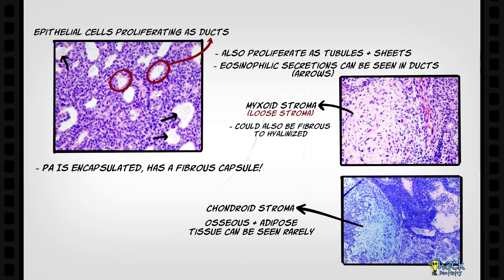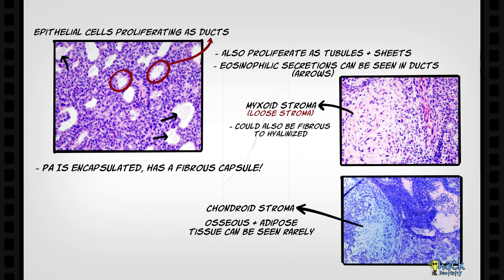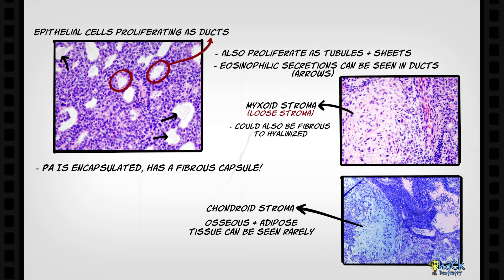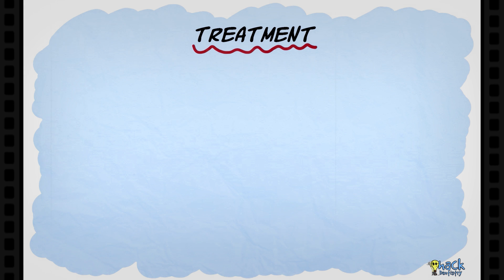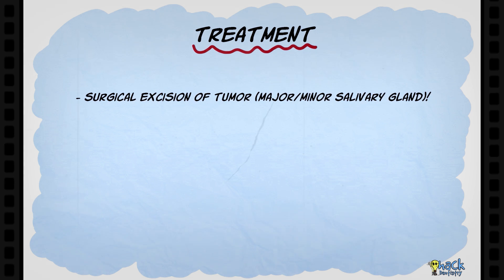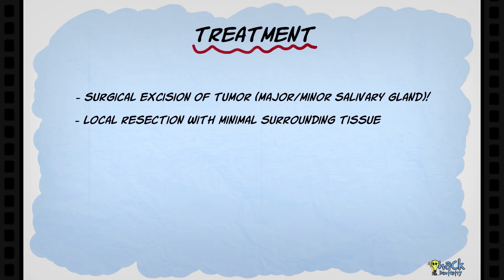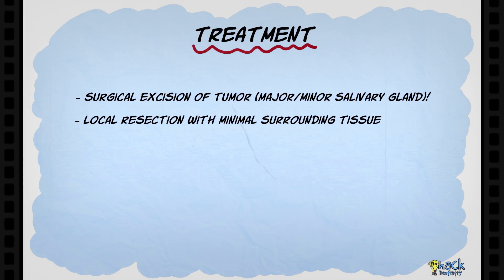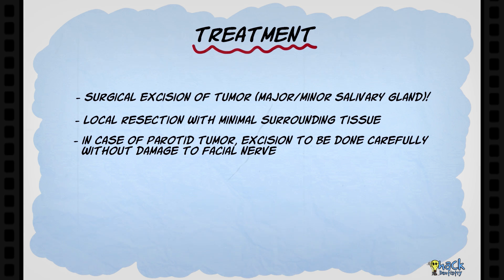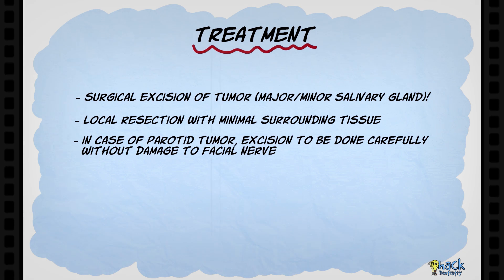Most importantly, pleomorphic adenoma is encapsulated and has a surrounding fibrous capsule. Surgical excision of the tumor is the treatment of choice in both the major and the minor salivary glands, accomplished by local resection with minimal surrounding tissue. In case the parotid gland is involved, surgical removal should be accomplished without damage to the facial nerve.